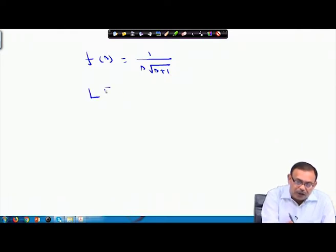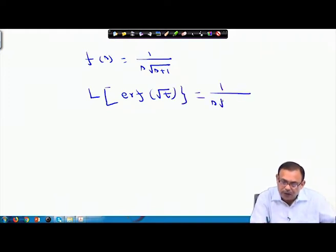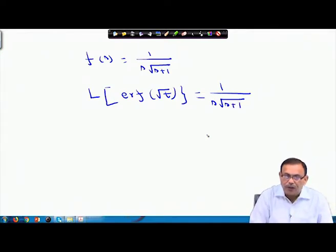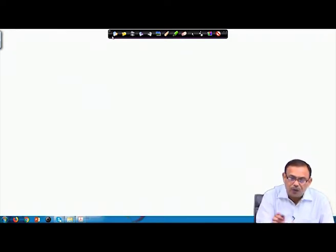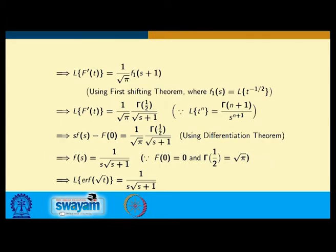Therefore F(s) = 1 / [s · √(s+1)]. So the Laplace transform of erf(√t) = 1 / [s · √(s+1)], since f(0) = 0 and Γ(1/2) = √π.